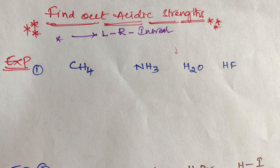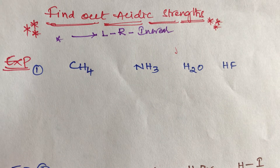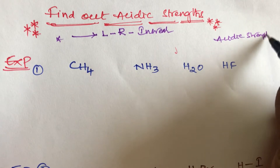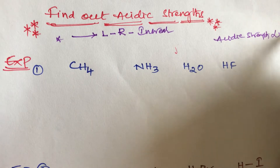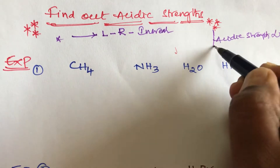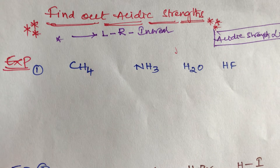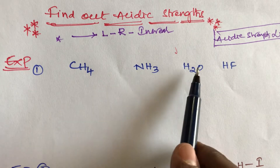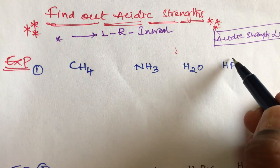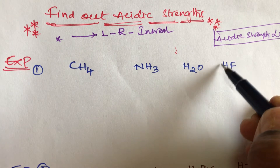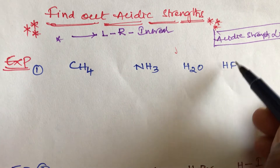Group 7 has the highest acidity. Here is a simple trick: acidic strength is directly proportional to electronegativity. Out of these four — carbon, nitrogen, oxygen, fluorine — fluorine has the highest electronegativity. So that is why HF is more acidic in nature and has the highest acidic strength.